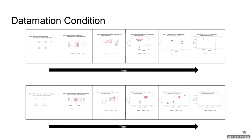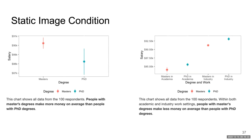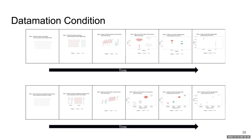The other half of participants saw a series of two datamations. I will go through each of these datamations frame by frame. Note that the last frame of each of these two datamations is the same as the left and right graphs from the static image. So in the first datamation, participants saw each survey respondent as a gray dot on a grid. Then the dots separated and were colored according to whether survey respondents had a master's degree or a PhD degree.